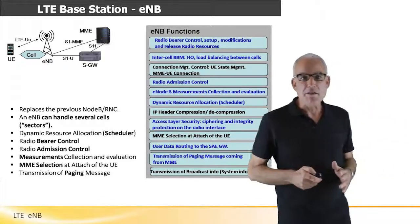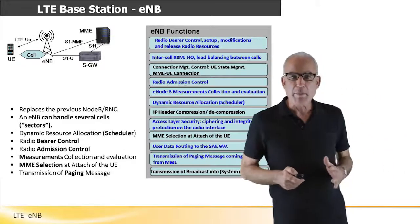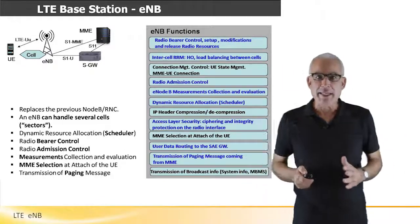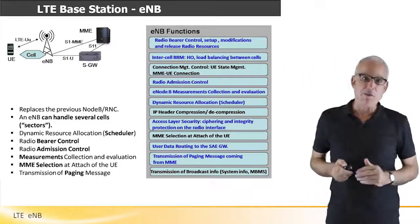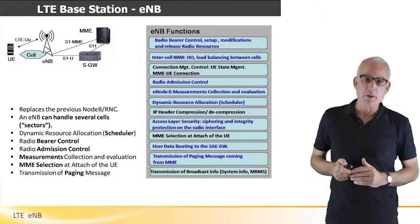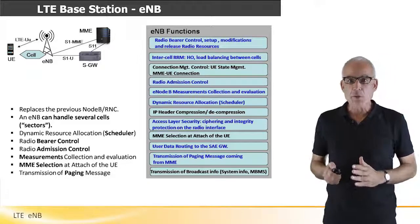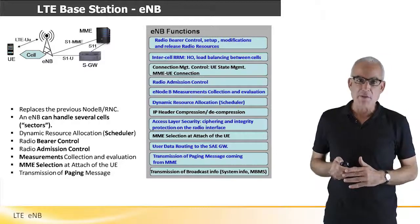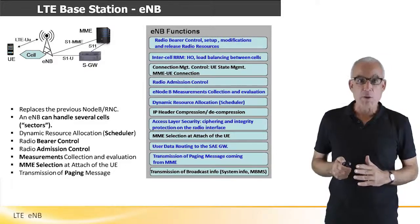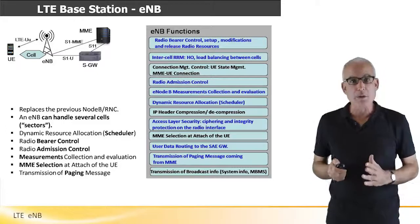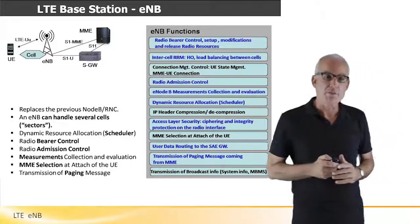The E0B is the only network element at the LTE radio access network. One E0B may include multiple cells for covering multiple, usually three, sectors.